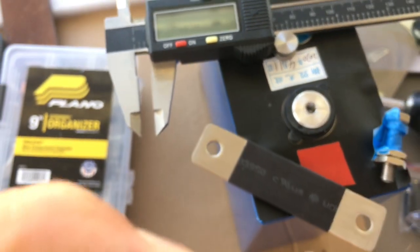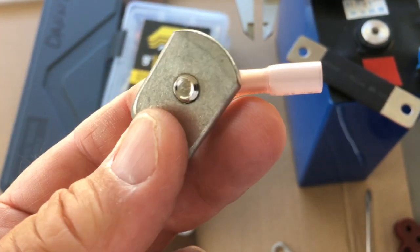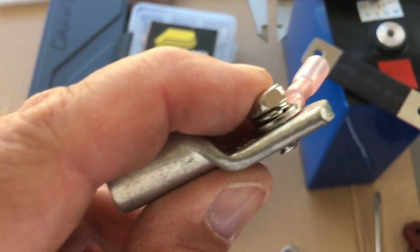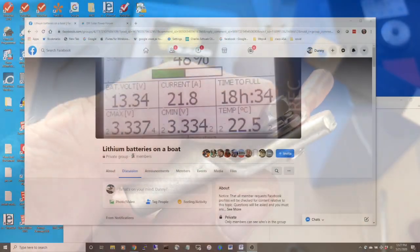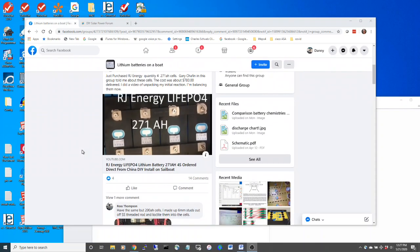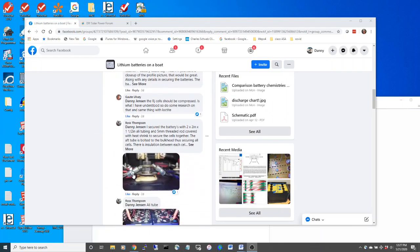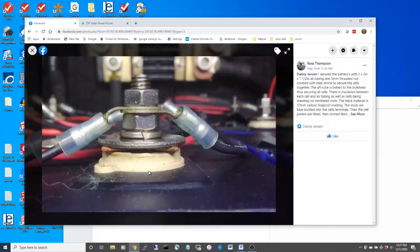I think we're going to have trouble and I think we're going to have to figure out how to deal with that trouble. A lot of people in this group, lithium batteries on boat, have RJ Energy batteries. There's a guy here, Ross Thompson, who did a really good job of giving me some ideas on what he's done.